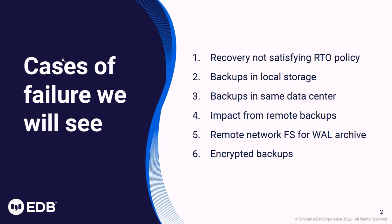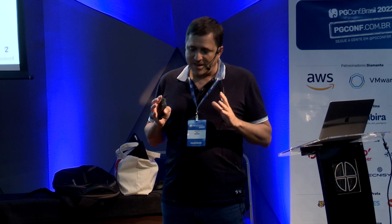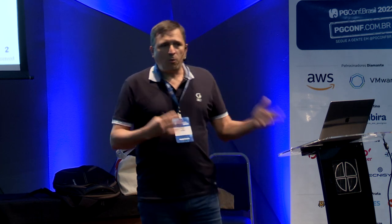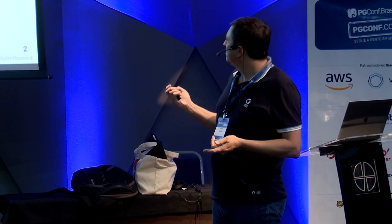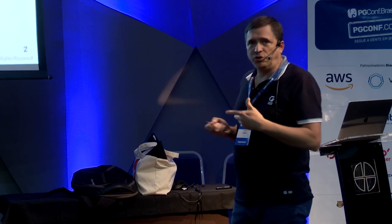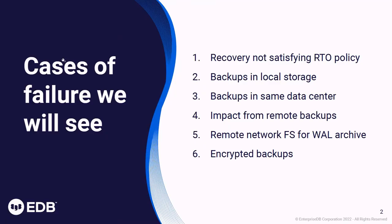What we're going to do in this talk is we're going to talk about different failures that customers can run into, what was wrong, and how can you prevent it from happening. These are the six cases we're going to look at. One is RTO and RPO — satisfying the RTO. The RTO is a policy that the business puts in place: how much time can we be down? Some businesses can say we can be down a whole day, we'll lose some money but it's okay. Then you've got businesses that say it's five seconds — that's the whole six nines.